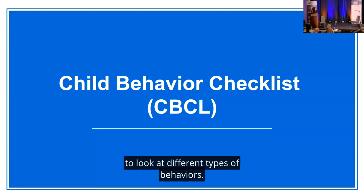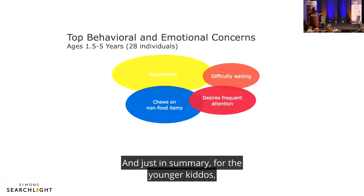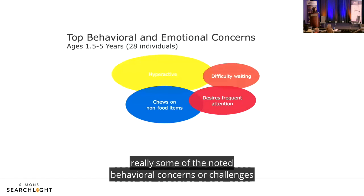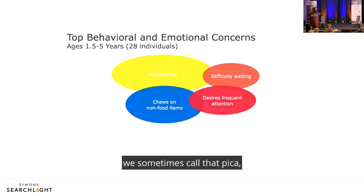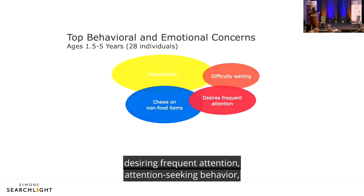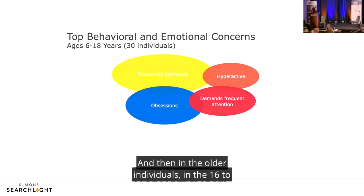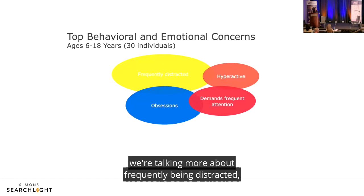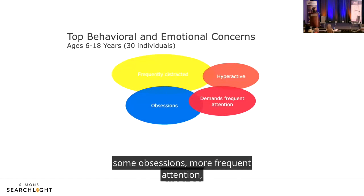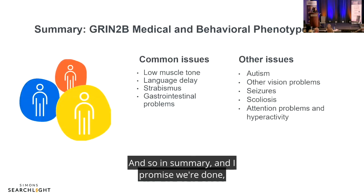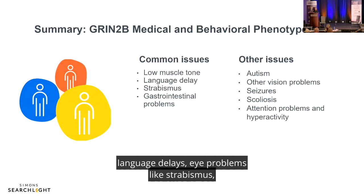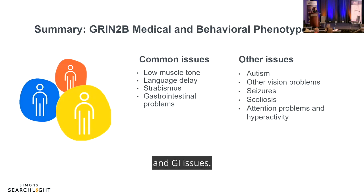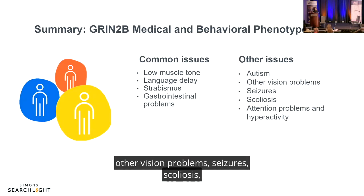The Child Behavior Checklist examines different types of behaviors. In younger children aged 1.5 to 5 — 28 individuals — notable behavioral challenges include hyperactive behaviors, chewing on non-food items (pica), desiring frequent attention, attention-seeking behavior, and difficulty waiting a turn. In older individuals aged 16 to 18, frequent distraction, some obsessions, attention-seeking, and hyperactive behaviors are noted. In summary, the most commonly reported issues are hypotonia, language delays, eye problems like strabismus, GI issues, autism, vision problems, seizures, scoliosis, and ADHD.